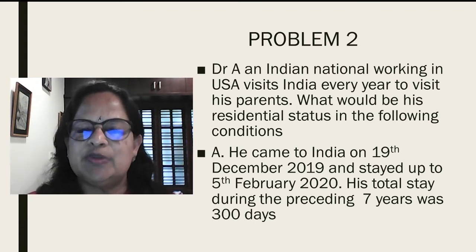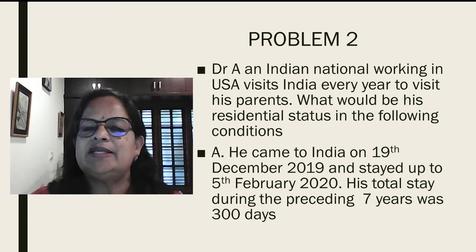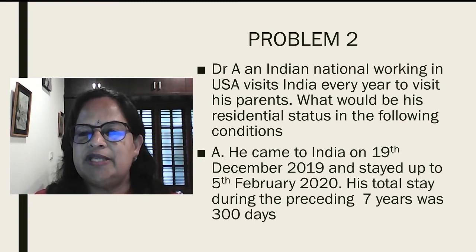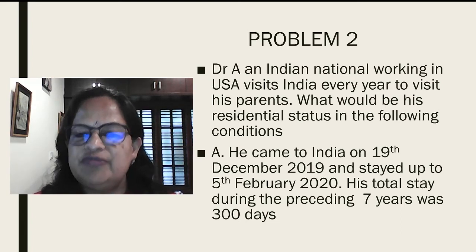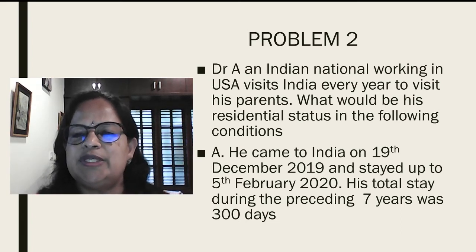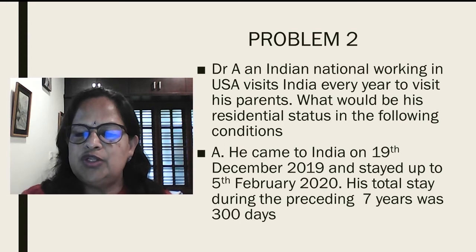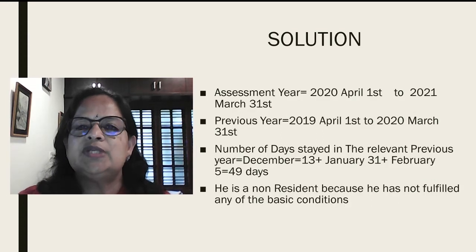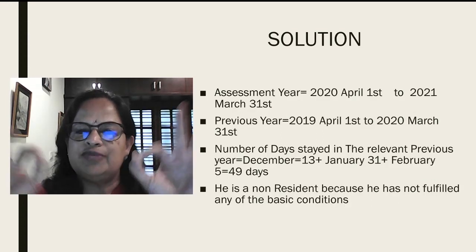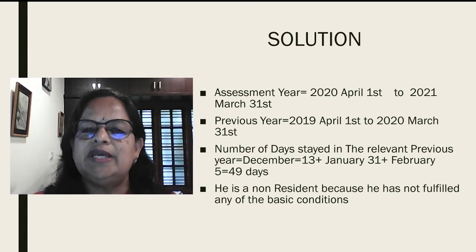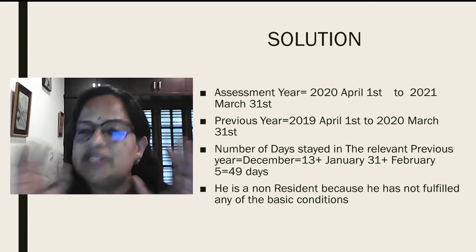First sub-question, section A: he came to India on 19th December 2019 and stayed up to 5th February 2020. His total stay during the preceding 7 years was 300 days. First, you have to remember to write the assessment year and previous year — get this registered in your brain.